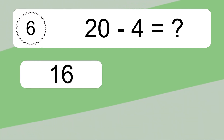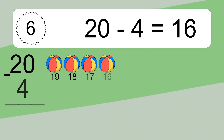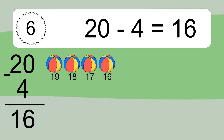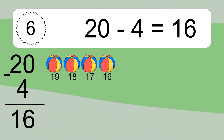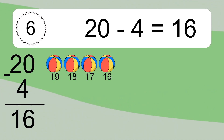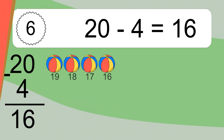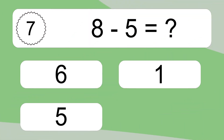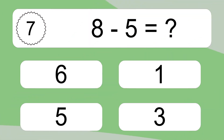20 minus 4 equals what? 20 minus 4 equals 16. Let's count it: 19, 18, 17, 16.